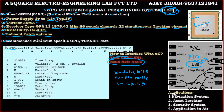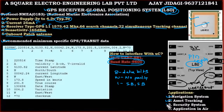Now let us look at the applications of the GPS receiver. The first application is navigation systems — it can be used in cars, mobile phones, or portable devices that give the exact location of a person or device. The next application is asset tracking — you can continuously track valuable assets by attaching a GPS to them. It can also be used in security systems and in aerial applications such as drones.